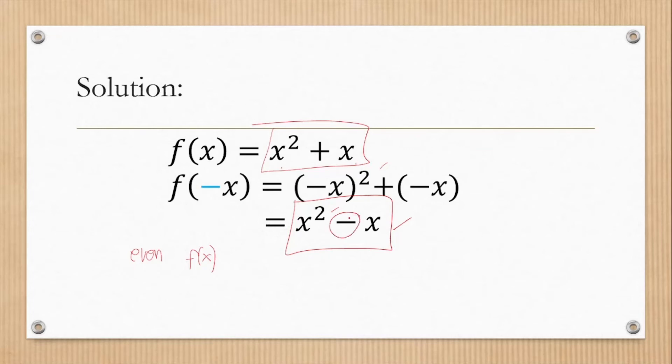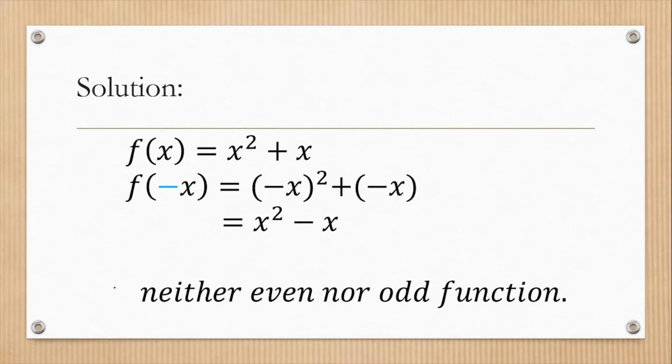To classify it as even, it should return to the original equation x² + x, but it didn't return, therefore it is not an even function. How about odd? The sign of the original equation should reverse. Here, only the sign of the second term x reversed, but the sign of x² did not reverse, so it also doesn't satisfy the condition for an odd function. Hence our conclusion: this function is neither even nor odd. Even if the degree is squared, it's not an even function. We can only test if a function is even or odd by plugging in the value of -x to the original equation.